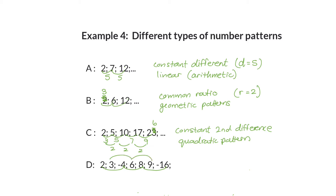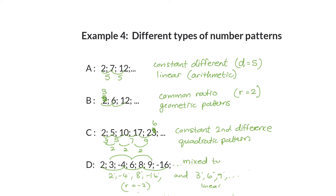The last type is a tricky one — it's two patterns in one. The terms two, negative four, eight, negative sixteen belong together as a geometric pattern with a common ratio of minus two. Alternating with those are three, six, nine, which form a linear pattern. This type is called a mixed pattern — it contains two different kinds of patterns. So those are your four types.